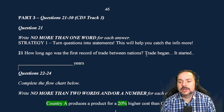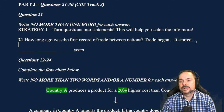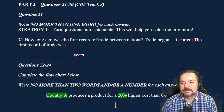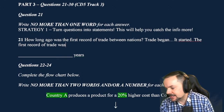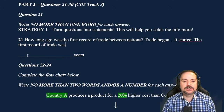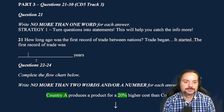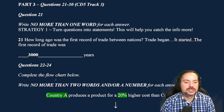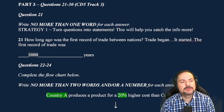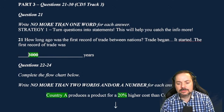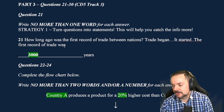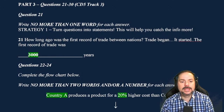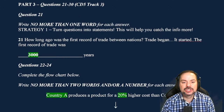The correct answer is 3,000 years ago — the first record of trade was between the Egyptians and the Arabic nations, 3,000 years ago. Simran and Doublet Beck got it right. Use the number — don't use a letter — it should say no more than one word or a number.